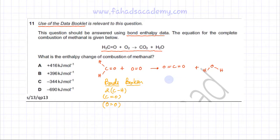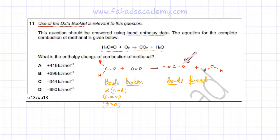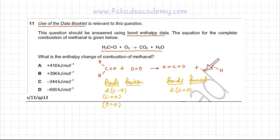Now I need to focus on the bonds that are being formed — the new bonds formed. Looking at the displayed formula, you would notice there is a C double bond O and another C double bond O, so there are two C=O bonds being formed. Plus there are two oxygen-hydrogen bonds, one on each side of the H2O molecule. So two O-H bonds are also being formed.